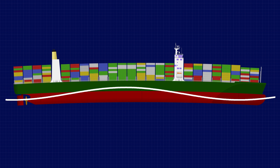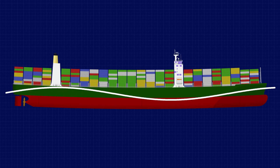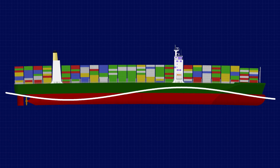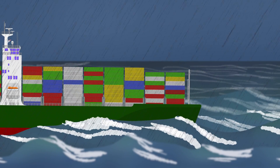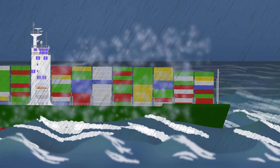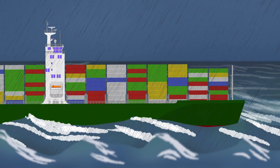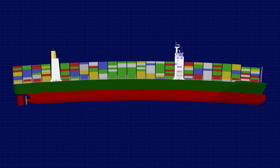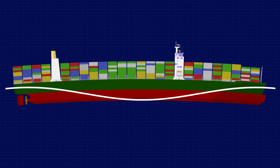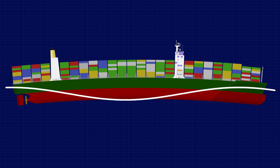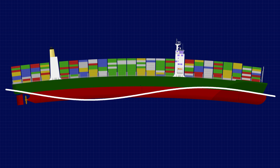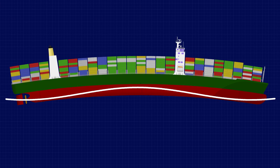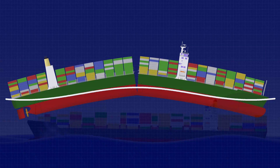This sort of hogging and sagging is inevitable for every ship, no matter how she's been loaded, so it's pretty much out of our control. Instead, ships are designed with the strength to be able to cope with anything that we can reasonably expect the sea to throw at them. What they can't cope with, however, is a hogging force created by the waves acting on a ship that is already severely hogged by its cargo. When this happens, it can lead to a ship literally snapping in half.